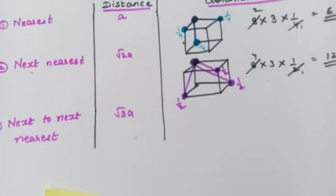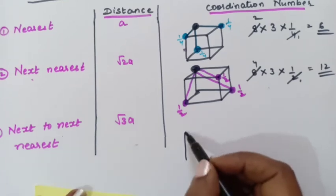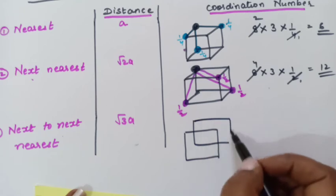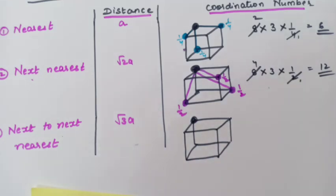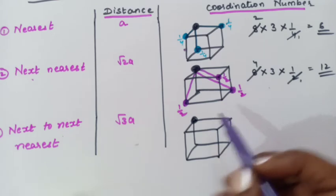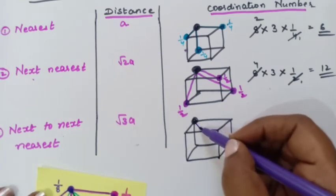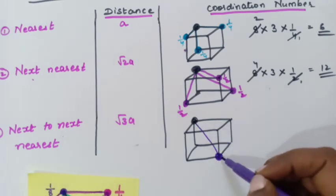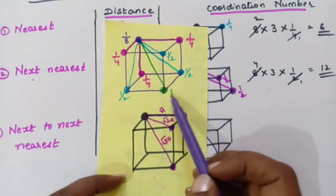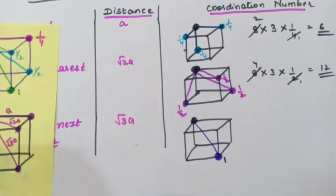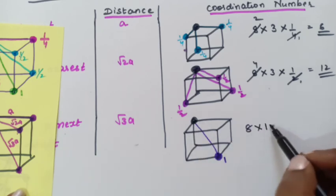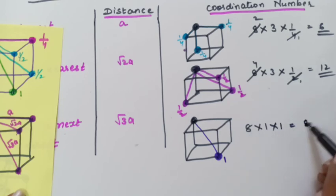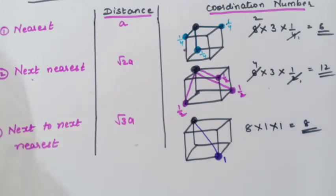Now let us find the coordination number of the next to next nearest atom. Draw a simple cube and consider a corner atom. The next to next nearest atom is at distance root 3A, passing through the body diagonal. It is in touch with this one atom, and its contribution is 1. How many corner atoms are there? 8. Each is in touch with 1 atom of contribution 1. So: 8 × 1 × 1 = 8. The coordination number of the next to next nearest atom is 8.